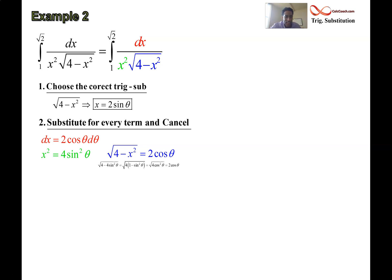So I've color-coded here nicely, and now I'm going to replace the red in the numerator, the green and blue in the denominator. We've substituted for every term. Also, with this step, we want to be able to cancel. The 2s are going to cancel, the cosine thetas are going to cancel, and you're going to pull out that 1 fourth.